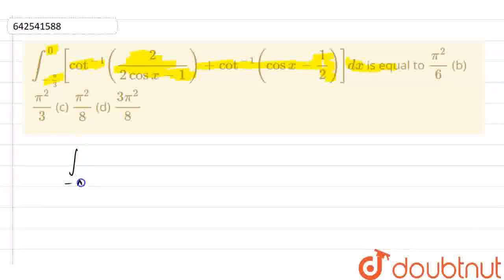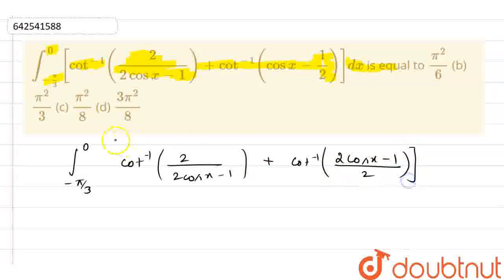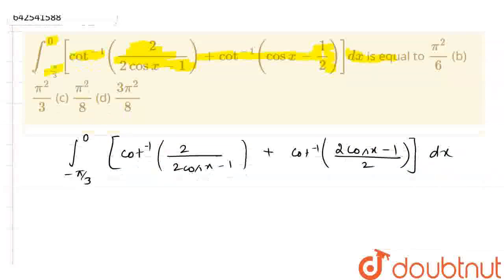So, my integral is minus pi by 3 to 0. Now, this is cot inverse 2 by 2 cos x minus 1 plus cot inverse. Now, if I take LCM, we have 2 cos x minus 1 by 2 whole bracket close dx.